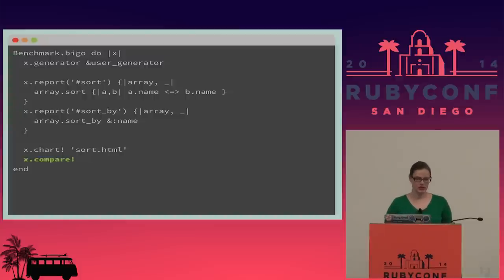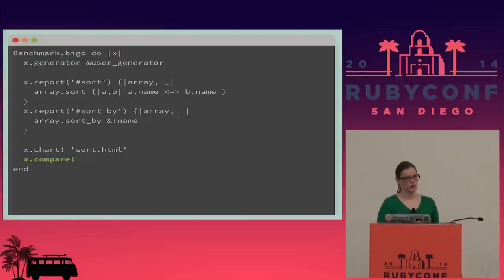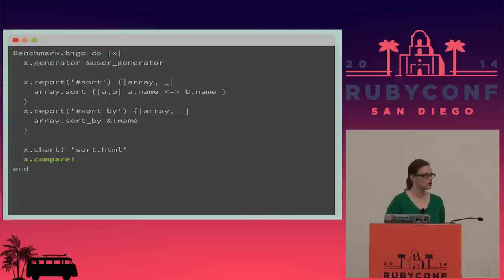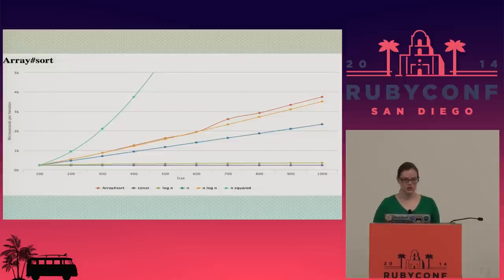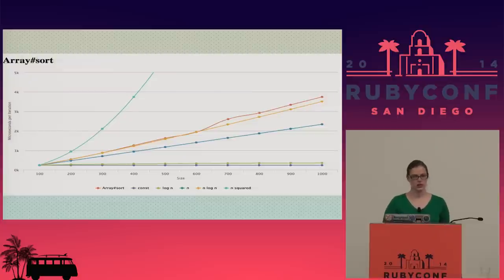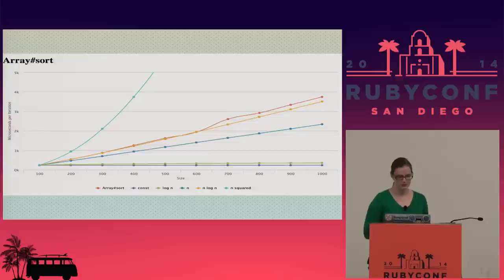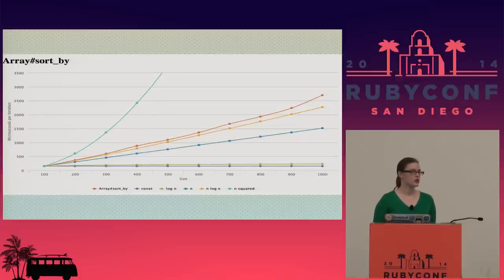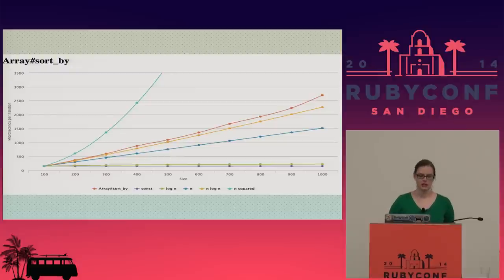The benchmark-bigO gem also has a compare function — once you've run the calculations, it compares them against known Big O notation lines so you can better see how the code performs. The array `sort` line lines up closely with the n log n line, which makes sense since sorting is an n log n operation. Similarly, `sort_by`, even though it performed better than `sort`, is still at the end of the day an n log n operation.